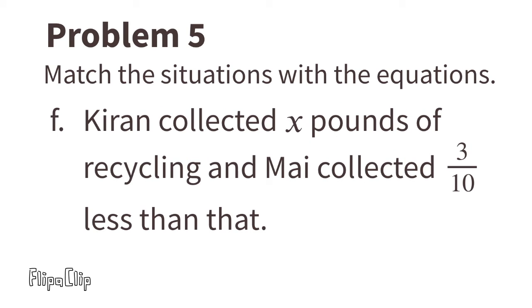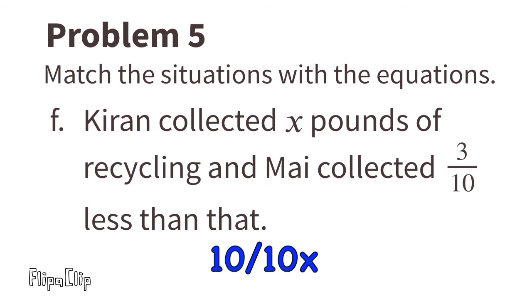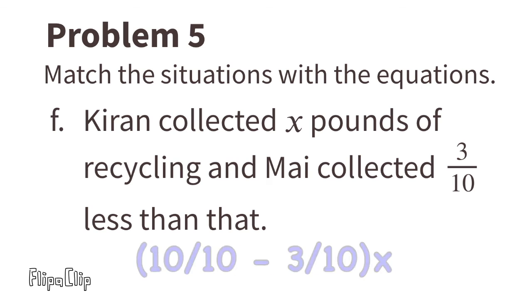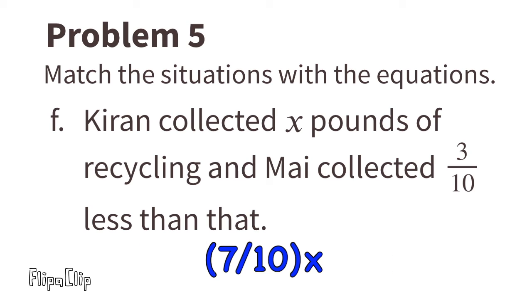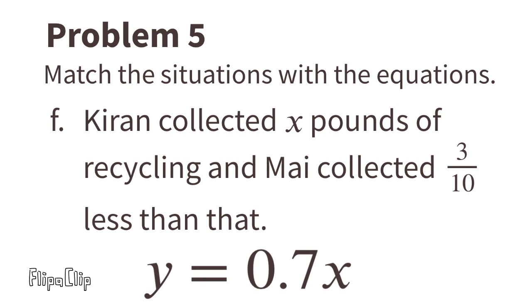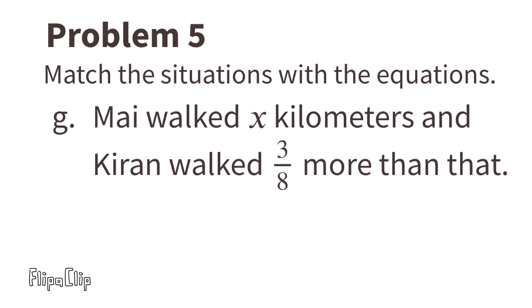Situation F: Kieran collected x pounds of recycling and Mai collected three tenths less than that. Kieran collected x pounds, or ten tenths x. Mai collected three tenths less: ten tenths minus three tenths equals seven tenths. The matching equation is y equals seven tenths x.